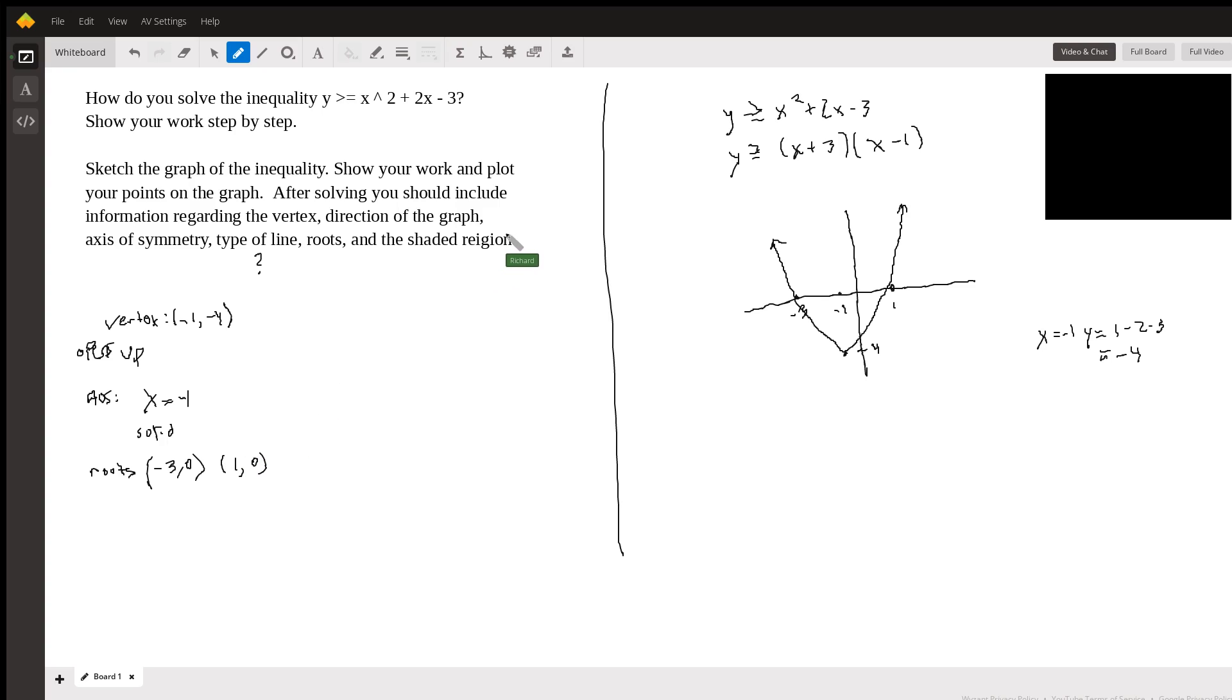And now all we have to do is shade. So what I like to do when I'm shading is I like to just test a point and see whether that point is inside or outside the solution region. So I always like to test (0, 0). I always like to use this. Now, if the curve is going through the origin (0, 0), you cannot use this. But this curve is not going through the origin. So I'm just going to use (0, 0). And I'm going to get 0 ≥ 0 + 0 - 3. And that just simplifies to 0 being greater than or equal to -3. And that's true.